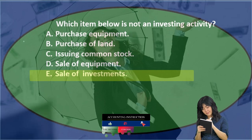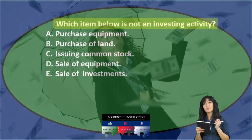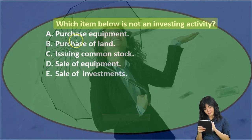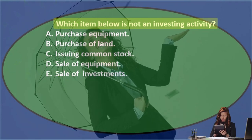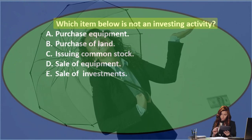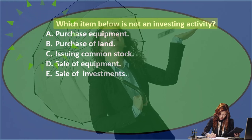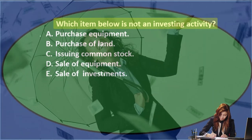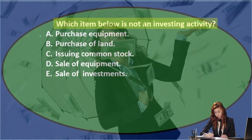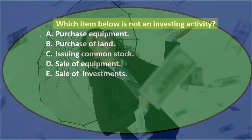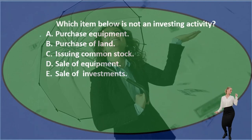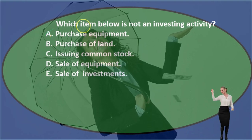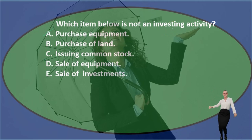Let's go through this again using the process of elimination. Which item below is not an investing activity? A. Purchase of equipment. If we think of the journal entry, it would be a debit to equipment and a credit to cash. There's no income statement account involved, so it's not an operating activity. We bought a long-term asset, so that's an investing activity — not our answer.